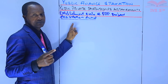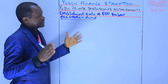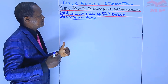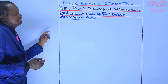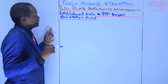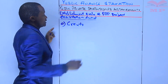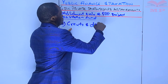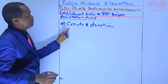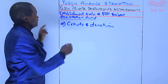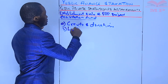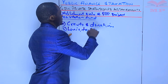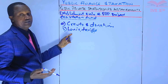The monies paid into the PPP Project Facilitation Fund include: grants, donations, levies, and tariffs. These are paid directly into the project facilitation fund.